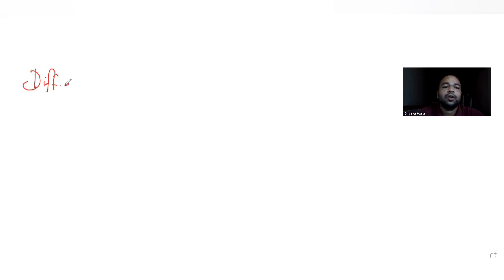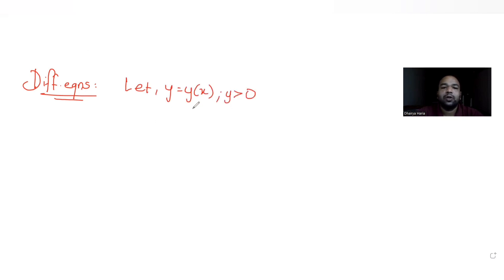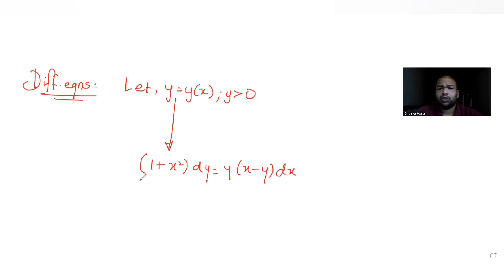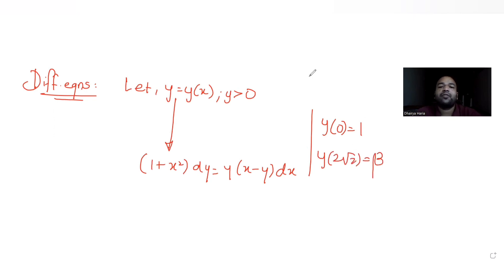Today's question is from the topic of differential equations. The question tells us: let y = y(x), where y > 0, be the solution curve of a differential equation given as (y + x²) dy = (yx − y) dx. We have been given two conditions: y(0) = 1 and y(2√2) = β. We have to find which of the following four options is the correct equation.